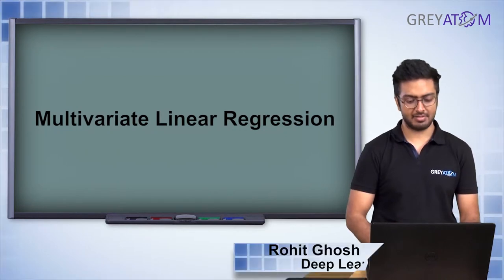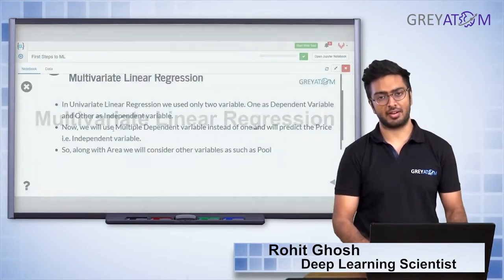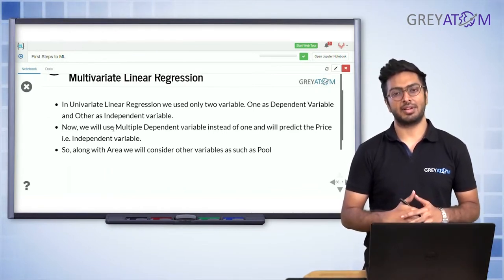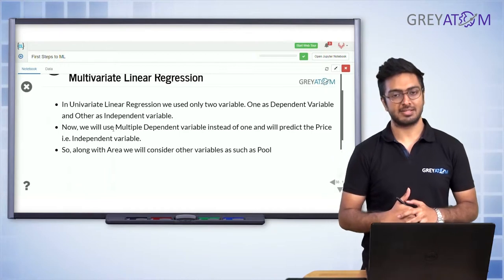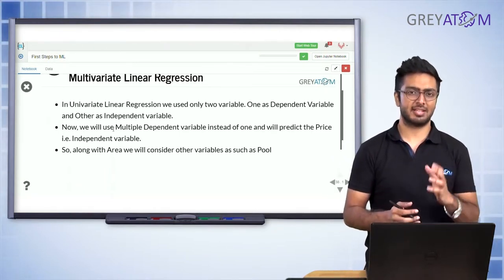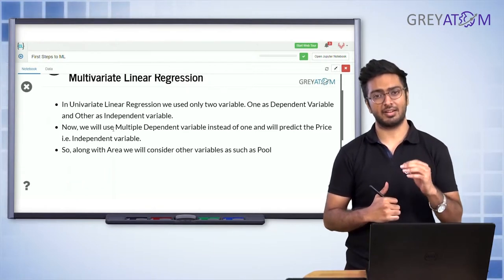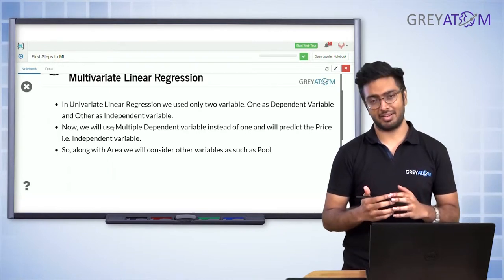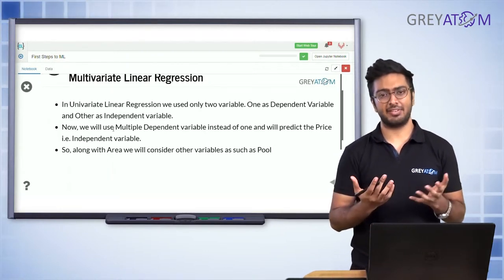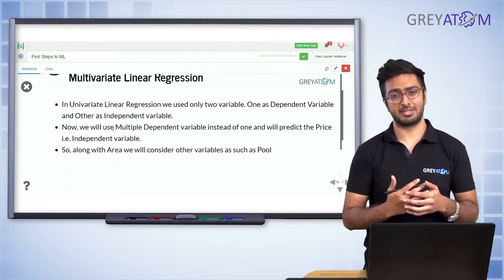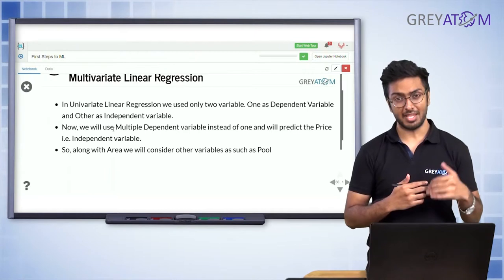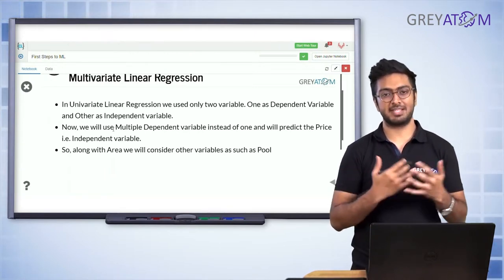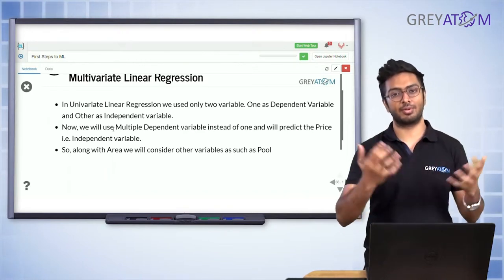We are now into multivariate linear regression. Earlier, we were plotting y versus x and trying to fit a straight line such that the deviation of the target from the prediction is minimized. The same concept applies here. In multivariate linear regression, instead of a line, it's going to be a plane if you're considering two independent variables, or a hyperplane if you're considering more than two.